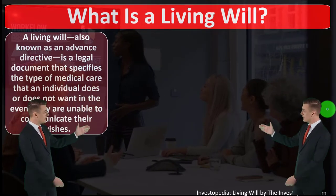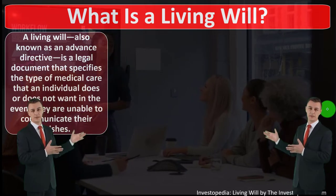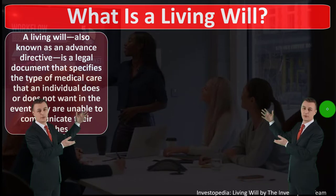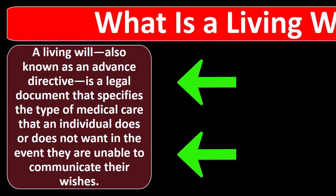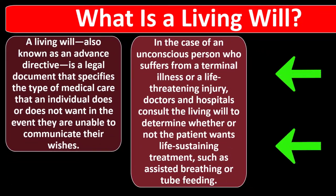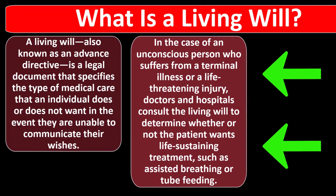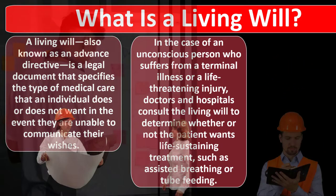In prior presentations we've been looking at estate planning, now focusing on particular components of it. This time, that being the living will. What is a living will? A living will, also known as an advanced directive, is a legal document that specifies the type of medical care that an individual does or does not want in the event they are unable to communicate their wishes. In the case of an unconscious person who suffers from a terminal illness or a life-threatening injury, doctors and hospitals consult the living will.